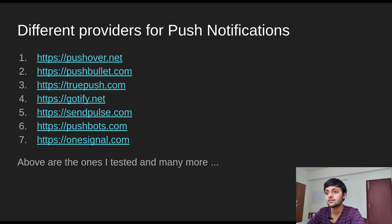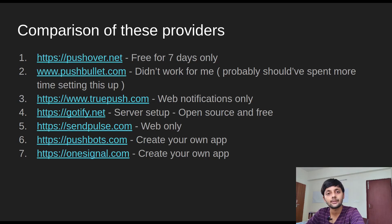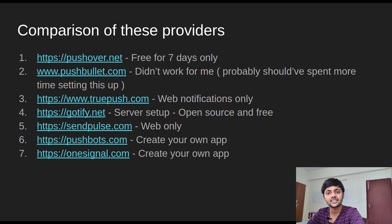These are the different providers I tested. Pushover is the tool of choice for many people — I remember in my Find Domain video, the documentation mentioned using the Pushover API. But I checked and found it was free for only seven days, after which you had to pay a one-time fee of around three to four dollars. Then there's Push Bullet, which helps you mirror all notifications from your laptop to your mobile — whatever notifications you see on the laptop, you can see the same on your mobile.